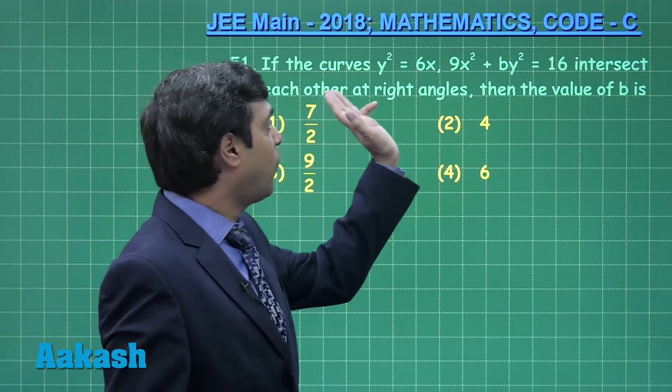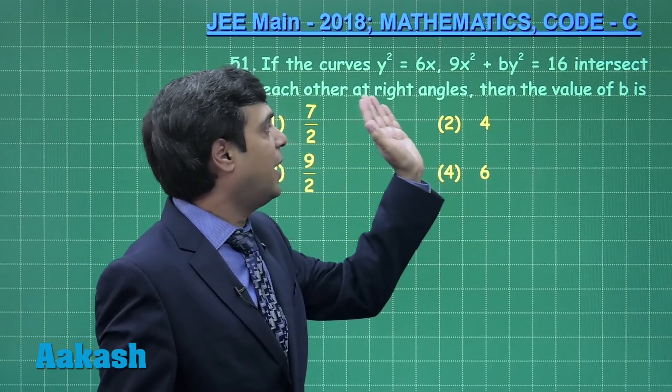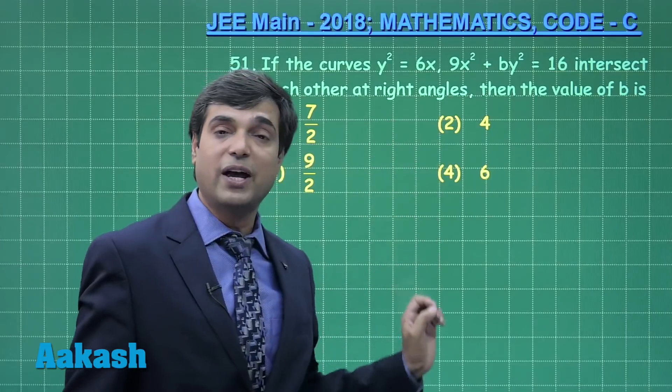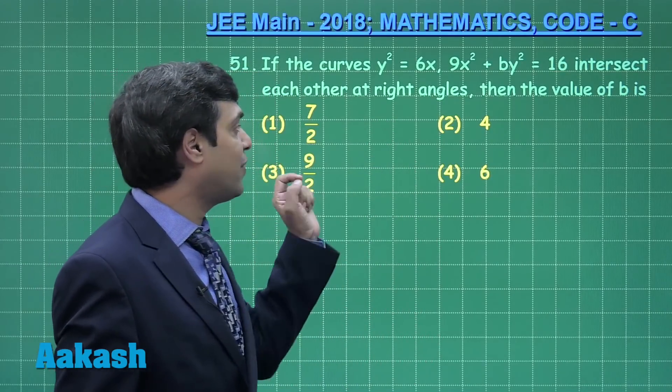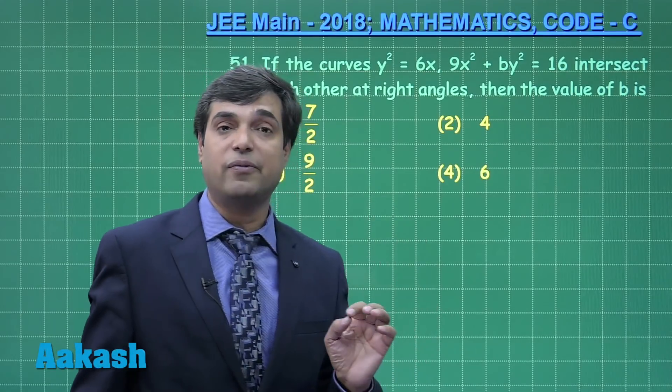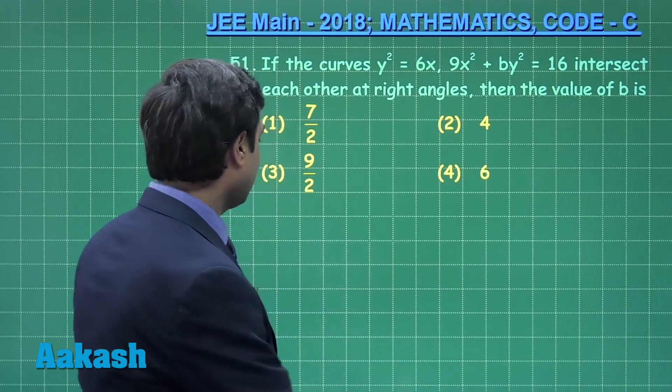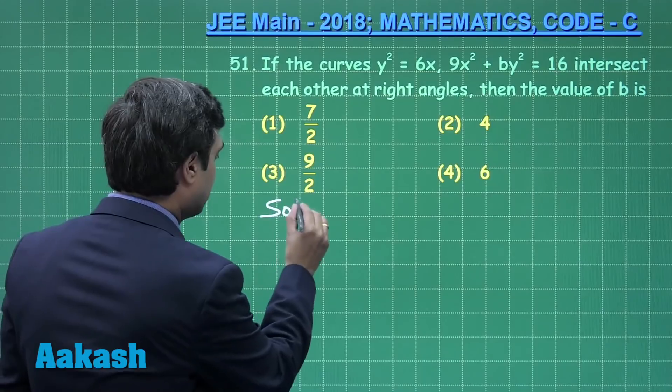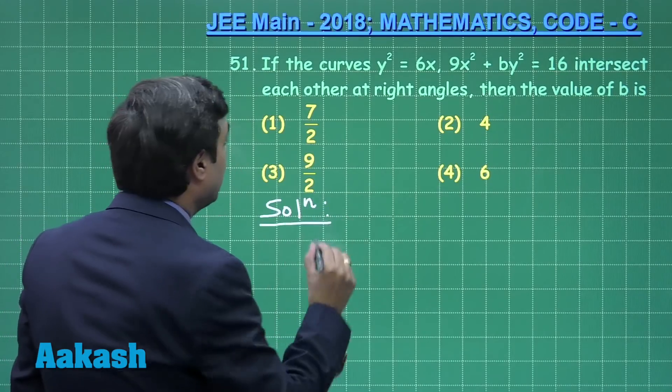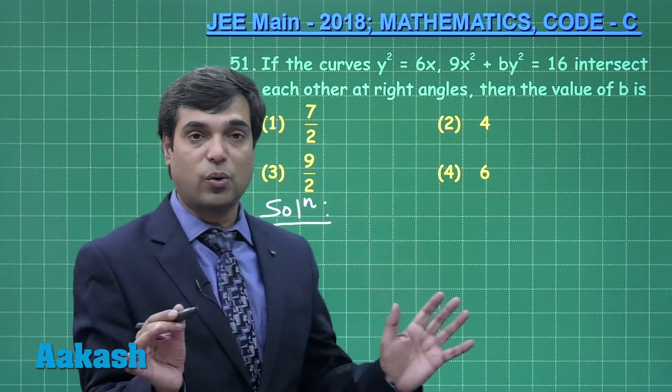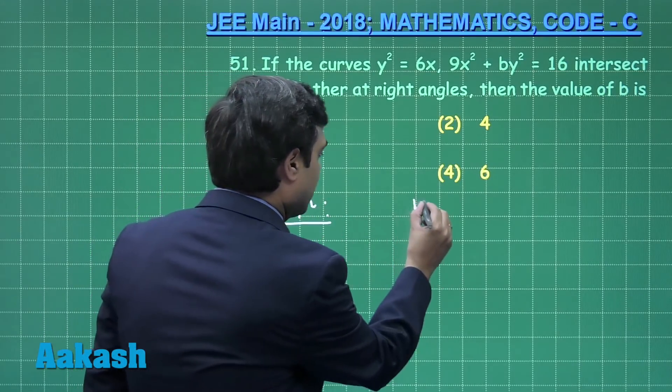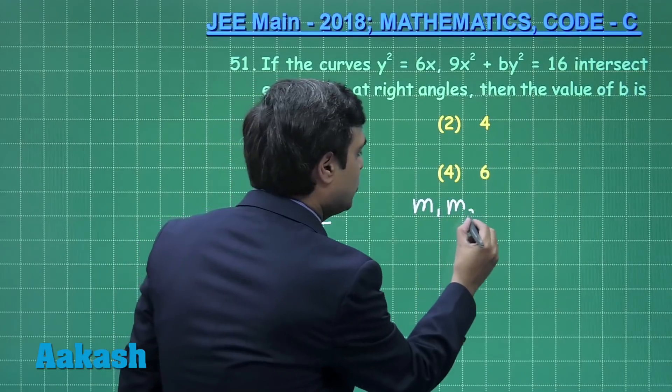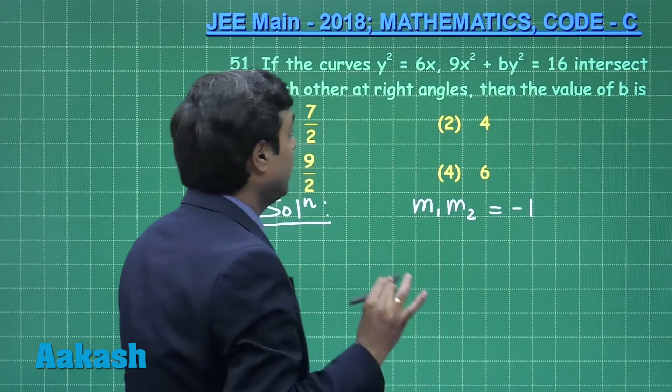Let us consider question number 51. If the curves y² = 6x and 9x² + by² = 16 intersect each other at right angles, then we have to find the value of b. Let us start this question: two curves are intersecting orthogonally, simple condition m₁m₂ = -1.